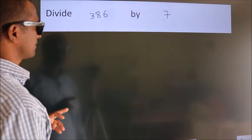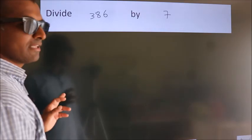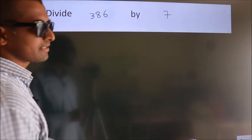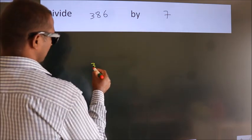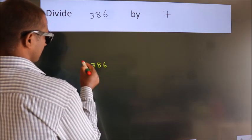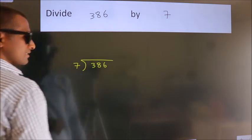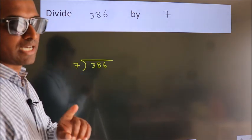Divide 386 by 7. To do this division, we should frame it in this way. 386 here, 7 here. This is your step 1.